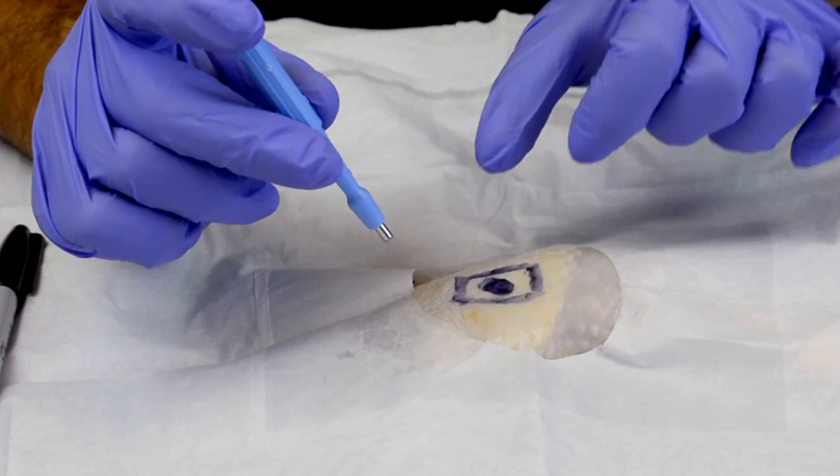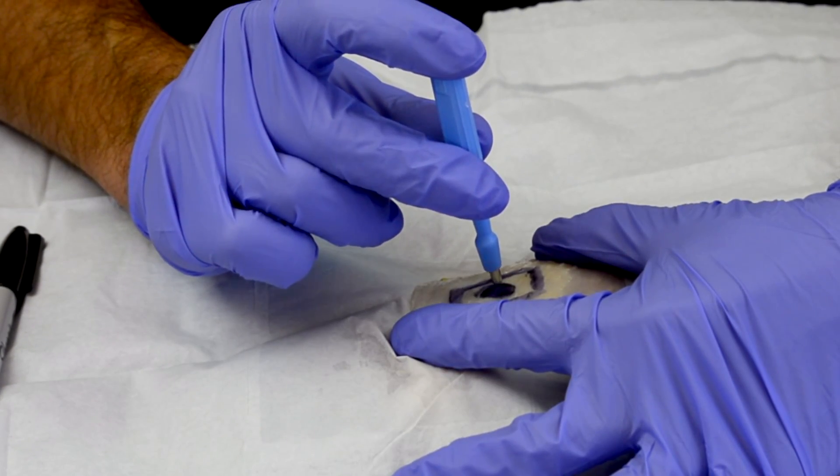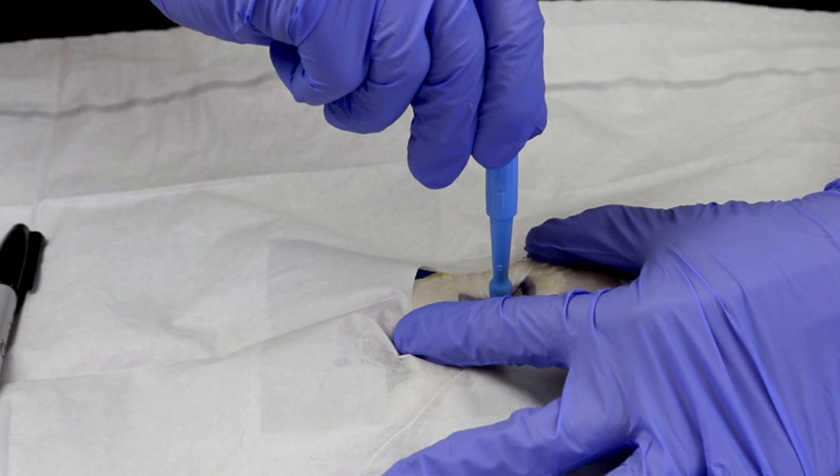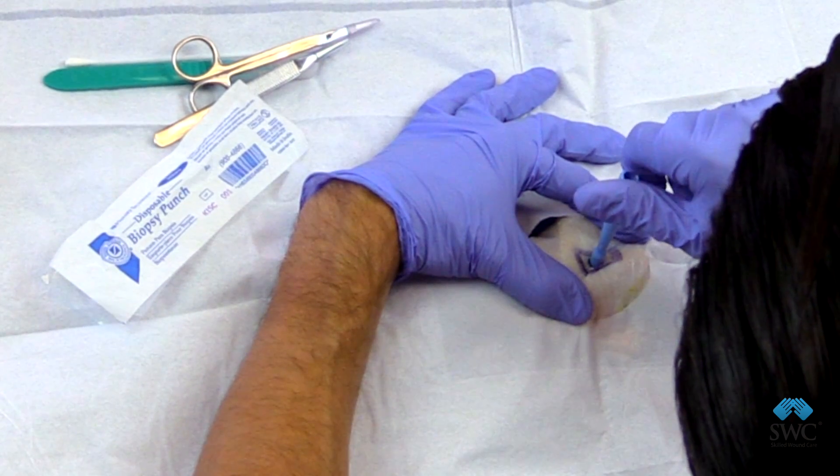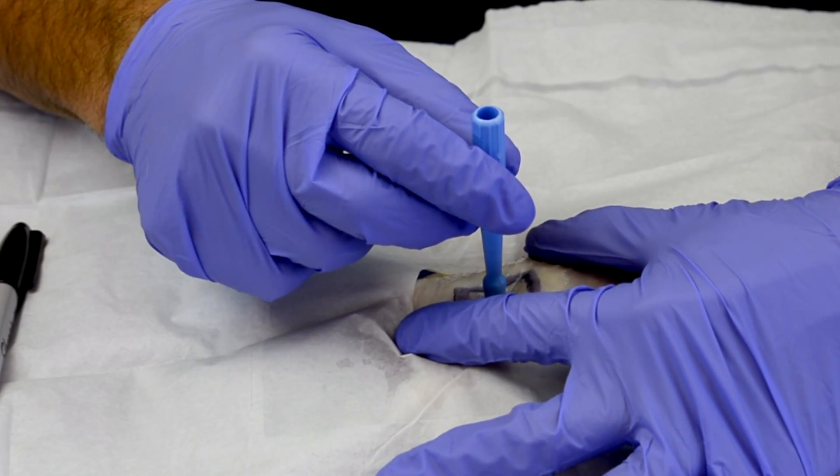I'm going to hold the tissue taut. That will make it easier. You will be using a circular motion. I'm going to be going in and going clockwise, and then you're going to get your actual tissue in the head of the punch biopsy.